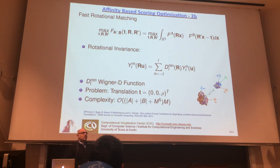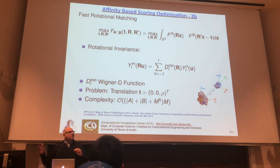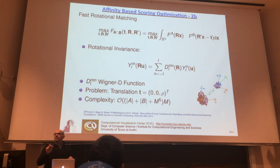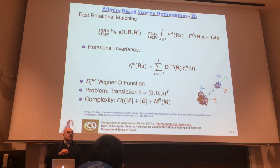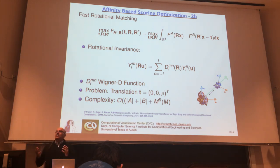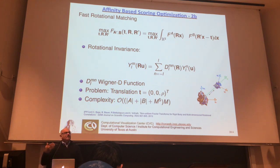Most Fourier transforms we learn about are uniform Fourier transforms over a regular grid with uniform spacing. But in molecules, atoms are not on a regular grid — they are scattered in space, and our motion sampling is also scattered. So we must use non-uniform fast Fourier transforms. That's another challenge where we go into the math and develop a non-uniform approximation based on the uniform Fourier transform, which we then apply to our problem.